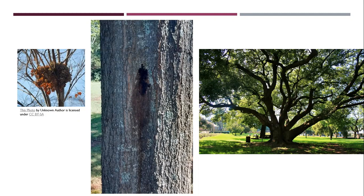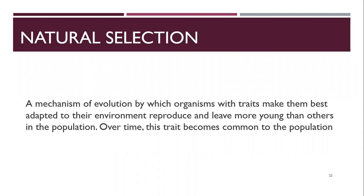That leads us to the ecological concept of natural selection. Natural selection is a mechanism of evolution by which organisms with traits that make them best adapted to their environment reproduce and leave more young than others in the population — and over time, that trait becomes common. Let's go through an example. Within a population there's natural variation of traits. Let's say a community of beetles: some are brown and some are green.